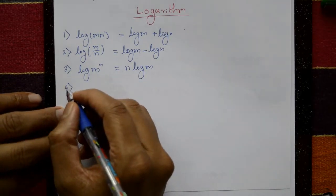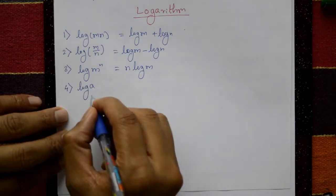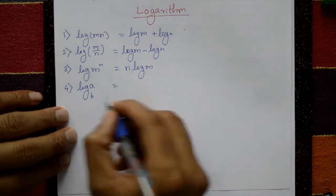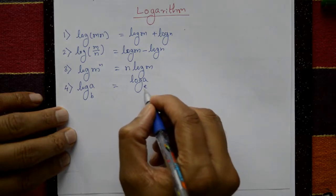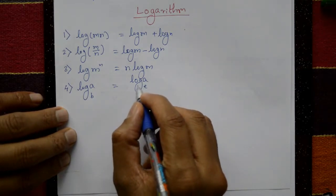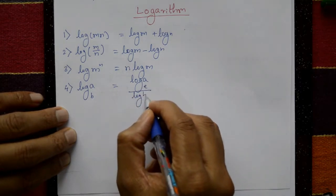Fourth one, log a to the base b. This is the change of base. Log a generally means natural logarithm or Napier logarithm. Log a to the base e divided by log b to the base e.